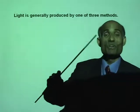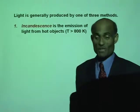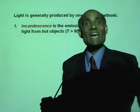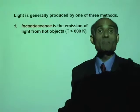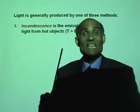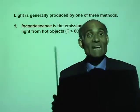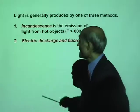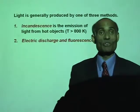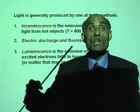I am going to give you those three methods, then I will talk about each of those. The first method of producing light is called incandescence — that is the emission of light from hot objects. Any object that is heated to a very high temperature will emit light. The second way of emitting light is electric discharge and fluorescence.